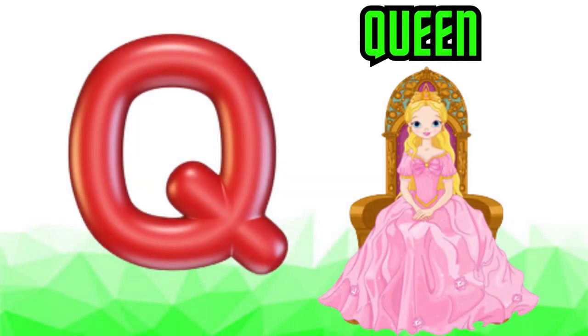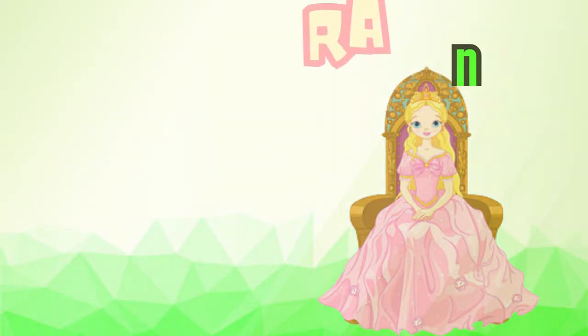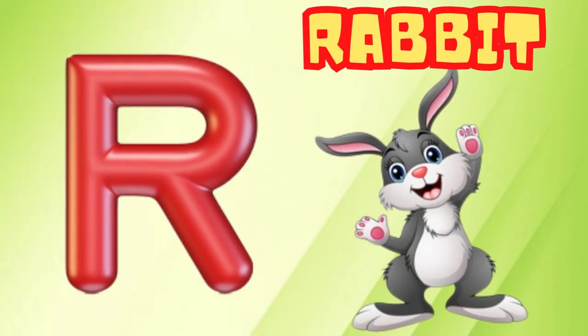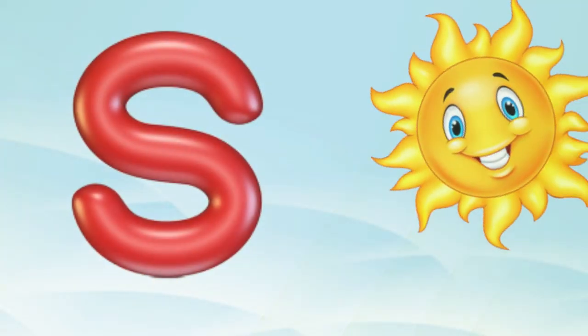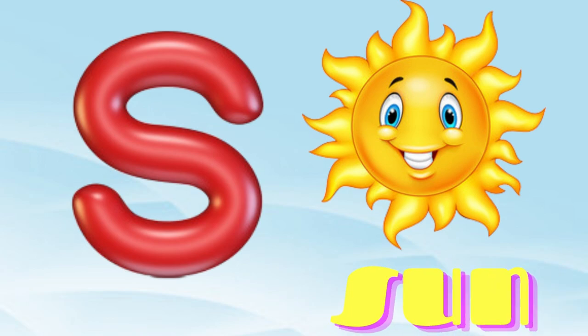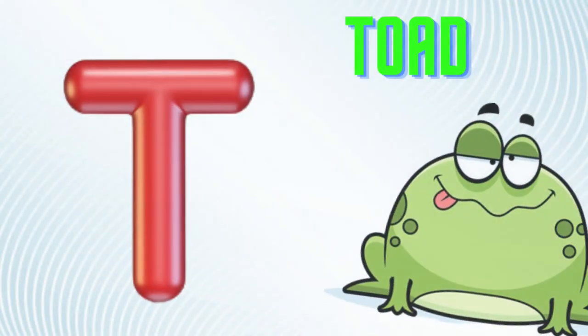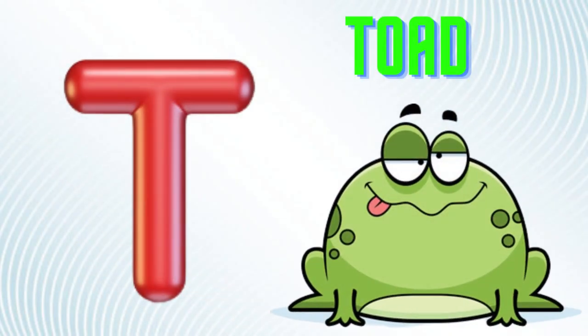Q is for Queen, Q-Q-Queen. R is for Rabbit, R-R-Rabbit. S is for Sun, S-S-Sun. T is for Toad, T-T-Toad.